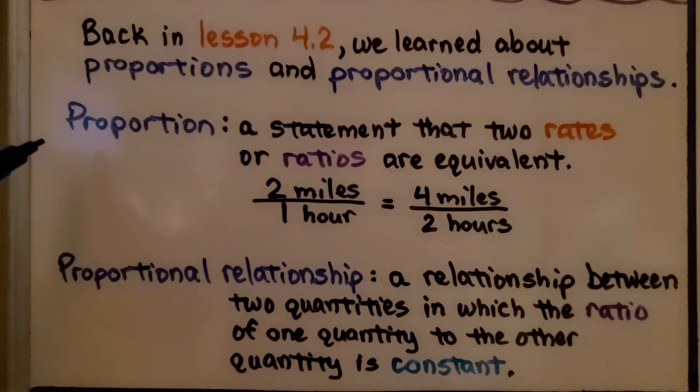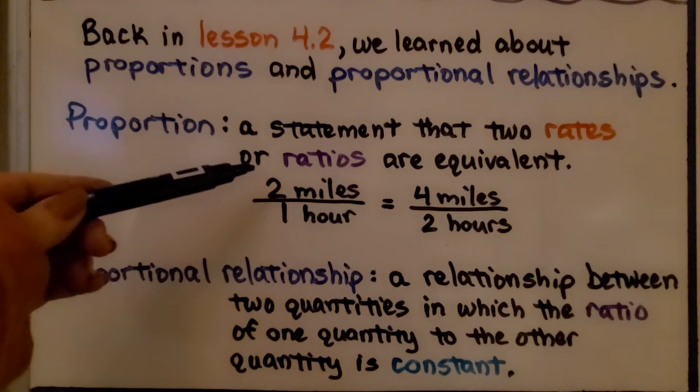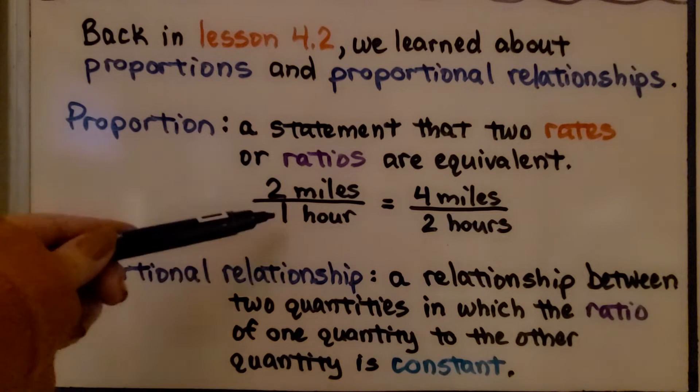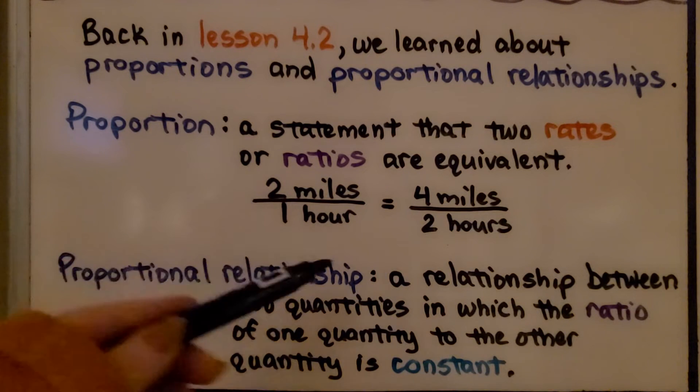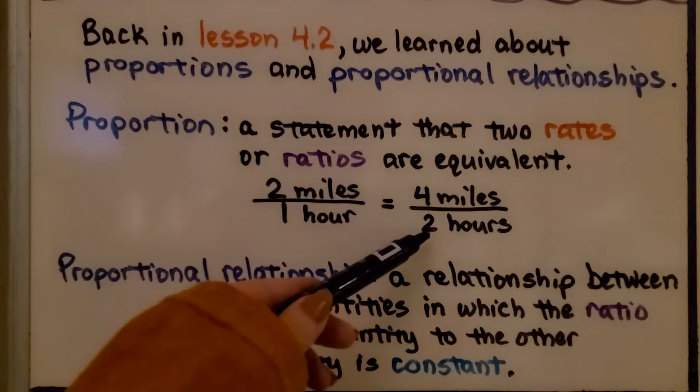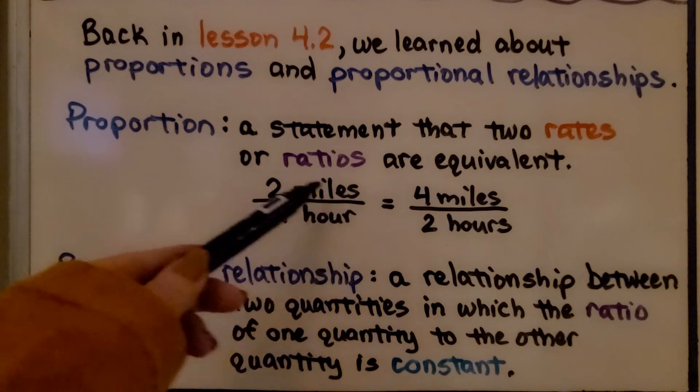A proportion is a statement that two rates or ratios are equivalent. So we would have two miles in one hour, that's two miles to one hour, and that would be equal to four miles in two hours. These are in proportion to each other.